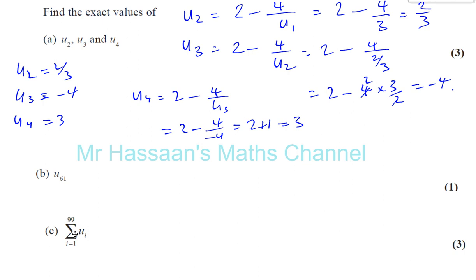That's why now they say find U61. Well, I think we can use this pattern. So basically, you have the first term is 3, and the second term is 2 thirds, and the third term is negative 4, then the fourth term becomes 3 again. And then you get 2 thirds, and you get negative 4, and then you get 3 again. So you're following that same pattern, 3, 2 thirds, negative 4, 3, 2 thirds, negative 4, 3, 2 thirds, and negative 4.